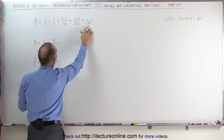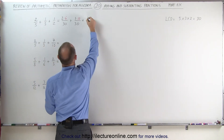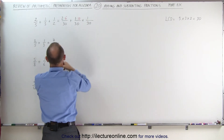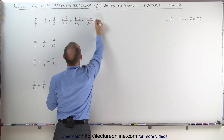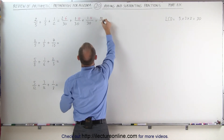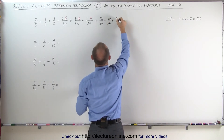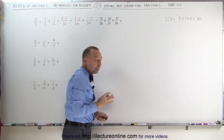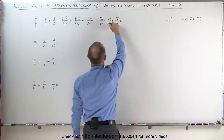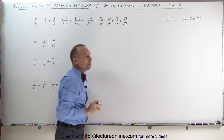To get from a 2 to 30, I have to multiply the denominator times 2, which means I also have to multiply the numerator times 15. Now we end up with 2 times 6, which is 12, divided by 30, plus 1 times 10, which is 10, divided by 30, plus 1 times 15, which is 15, divided by 30. Now we can add up all the numerators because all the denominators are the same. 12 plus 10 is 22, plus 15, that would be 37 divided by 30, and we'll just leave it as an improper fraction.